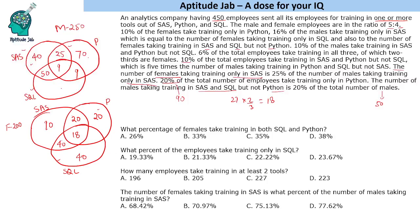Now we are left with two missing values. We find them by subtracting all known values from 250 and 200 respectively. For males: 40 + 70 + 25 + 9 + 15 + 9 = 90... summing to 203, leaving 47 for males taking only SQL. For females: 20 + 10 + 40 + 20 + 40 + 18 = 148, leaving 52 for females taking Python and SQL but not SAS.